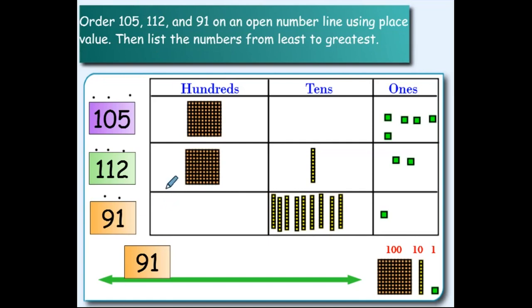Now we look back at 105 and 112. Both of them have one hundred. That does not help us compare, so we can cross the hundreds place out and move on to the tens place. 105 has zero tens and 112 has one ten. That means 105 is fewer than 112. Therefore, 105 will go next on the number line.